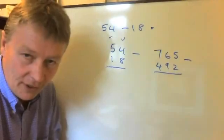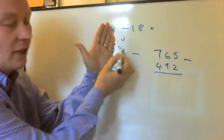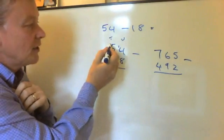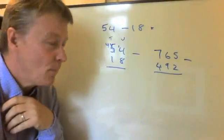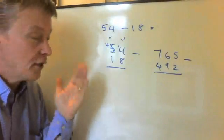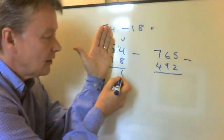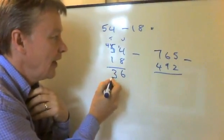Because I'm borrowing from the tens column I'm going to now make that number here 14 and also I'm going to reduce that to four. So now I have two calculations. 14 take away eight which is six and four take away one which is three.